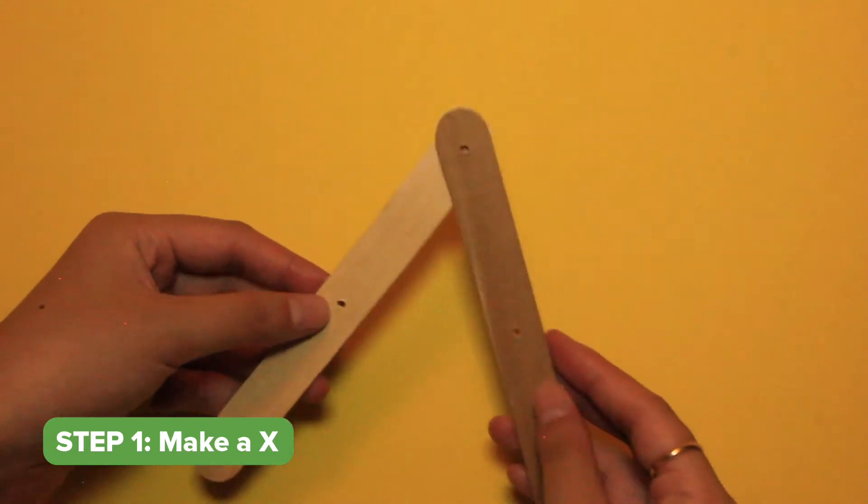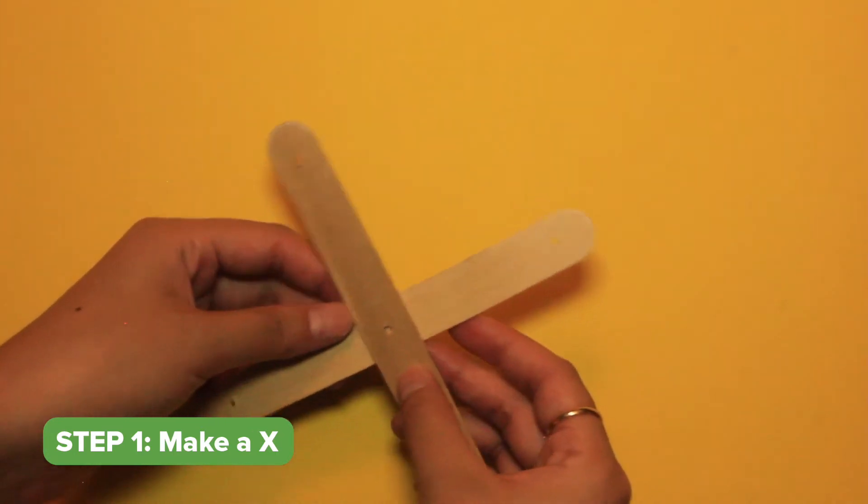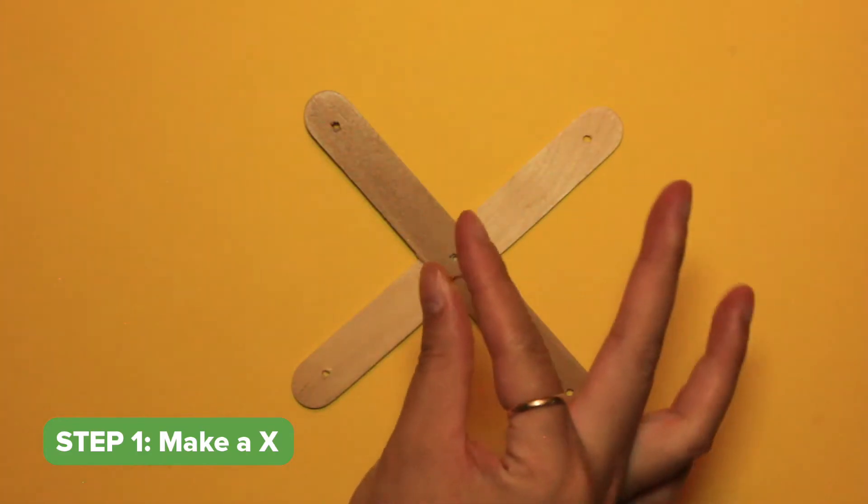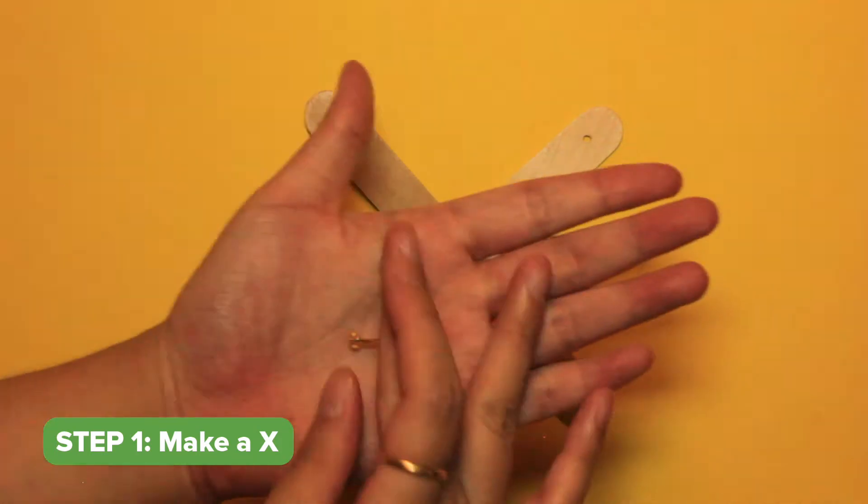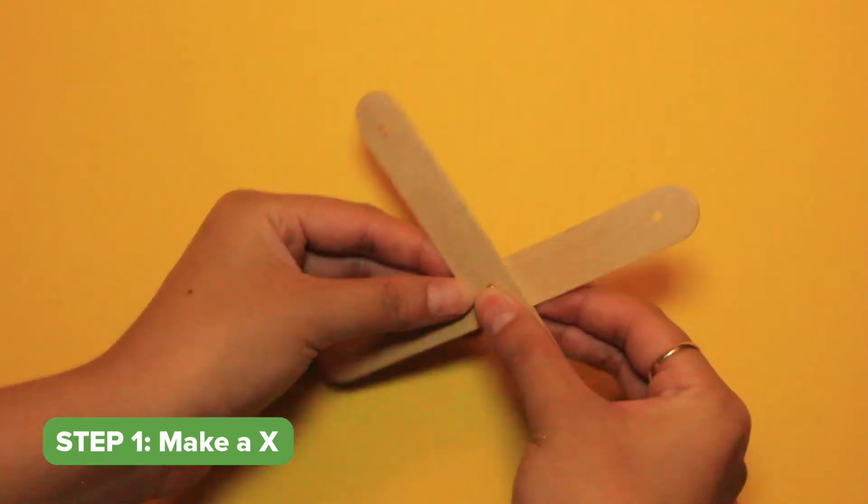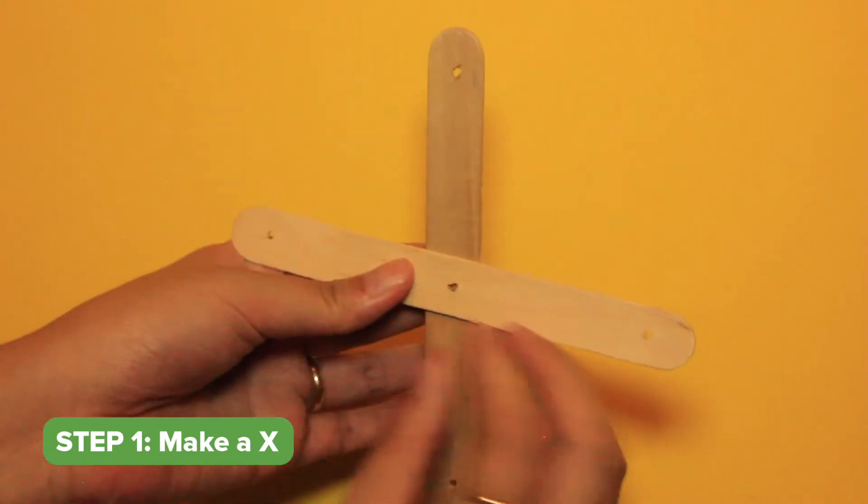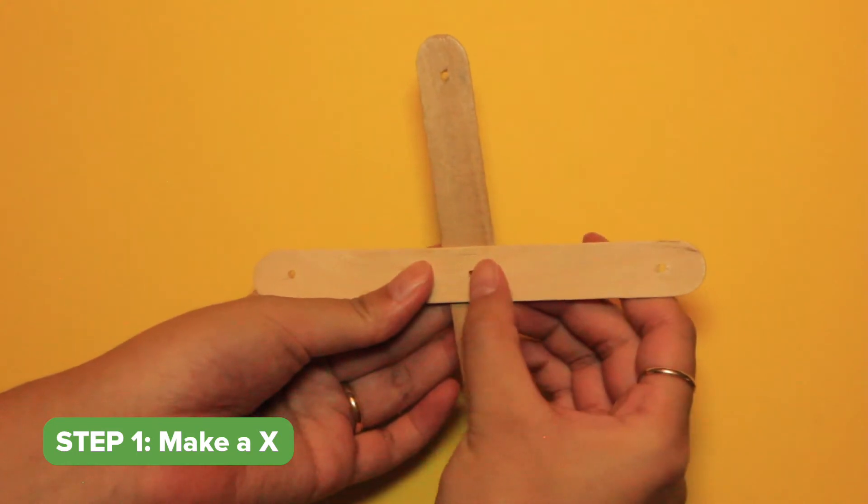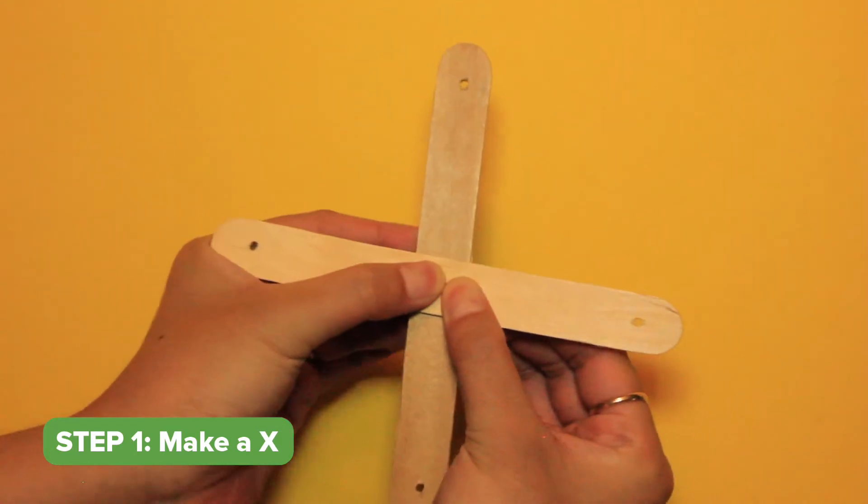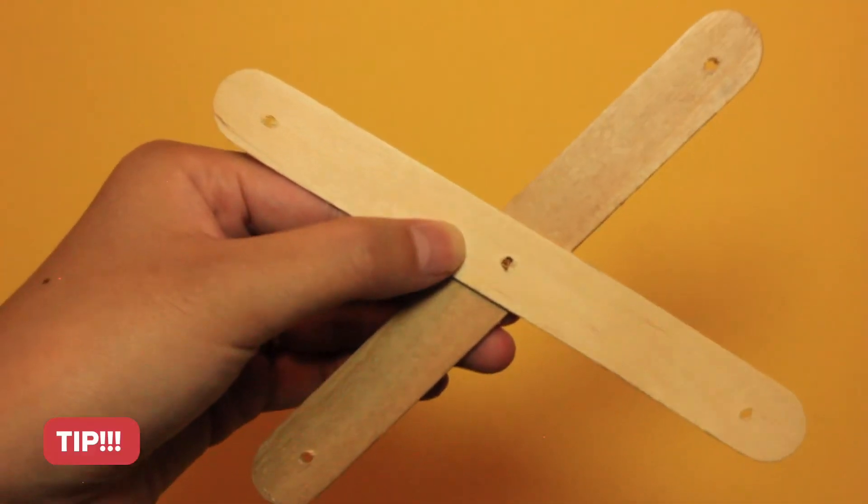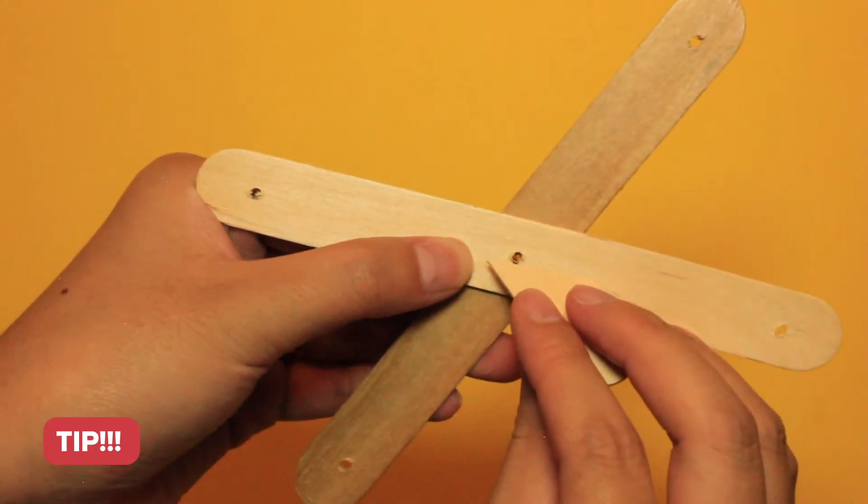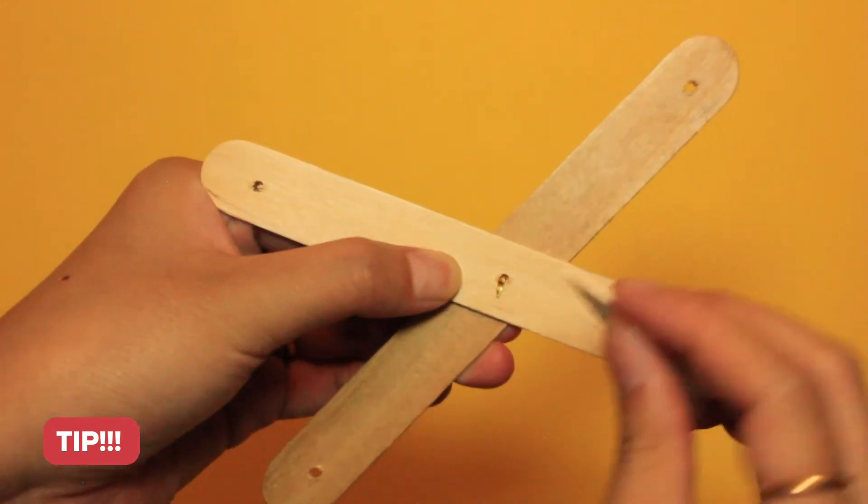Step 1. Take two craft sticks and cross them on top of each other like an X. Make sure the tiny holes overlap. Insert one of your brass fasteners into the hole. Turn the craft sticks over and open the brass fasteners so that you can lock it in place. If you're having trouble opening up the back of your brass fasteners with your fingers, here's a little trick. Take one of your craft stick ends and open it up just like this.